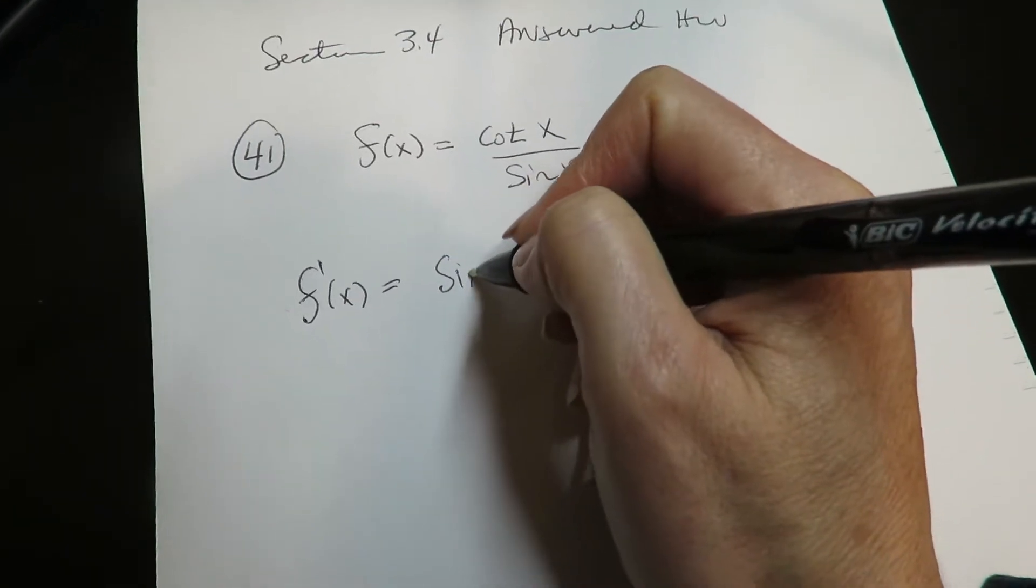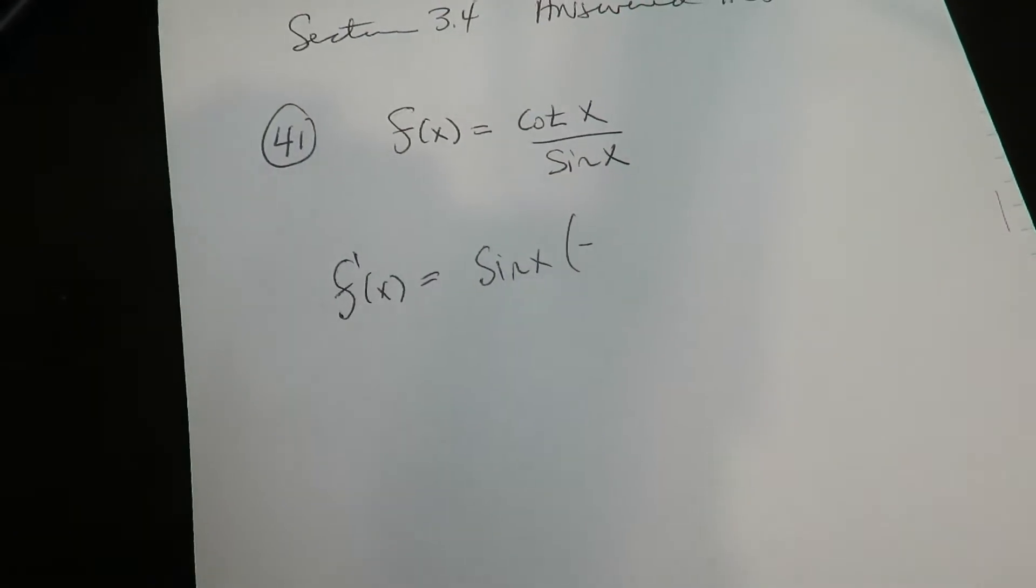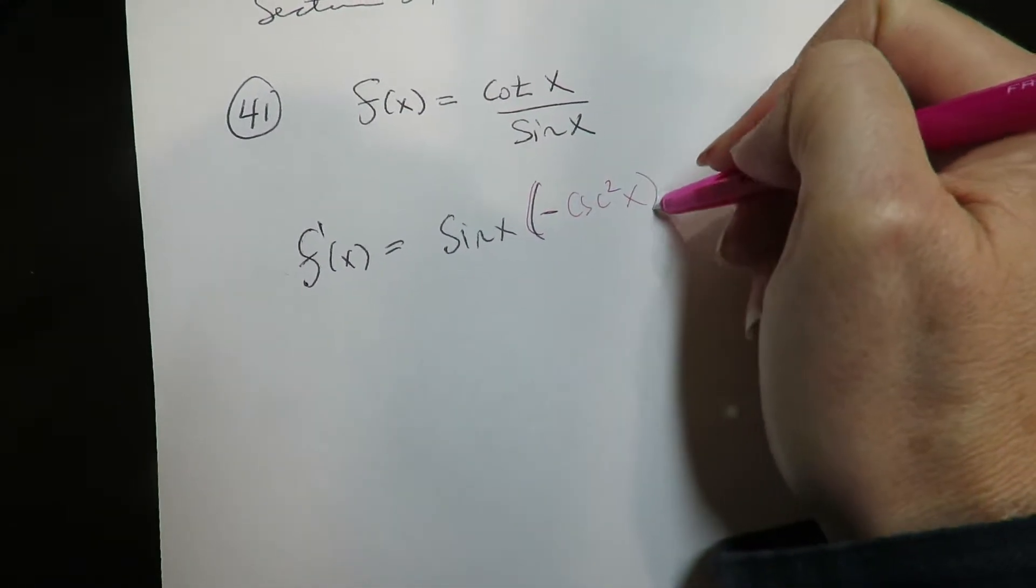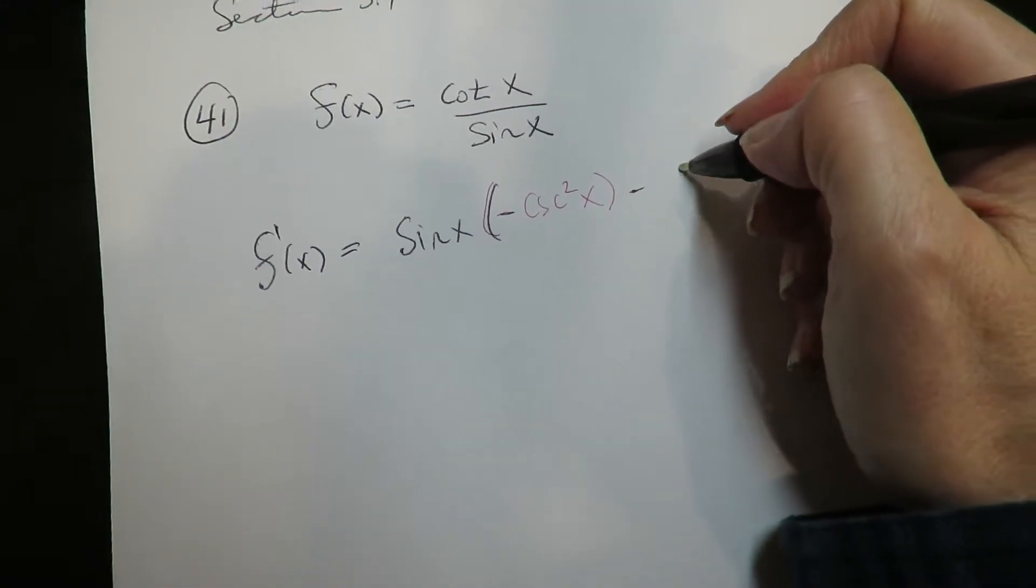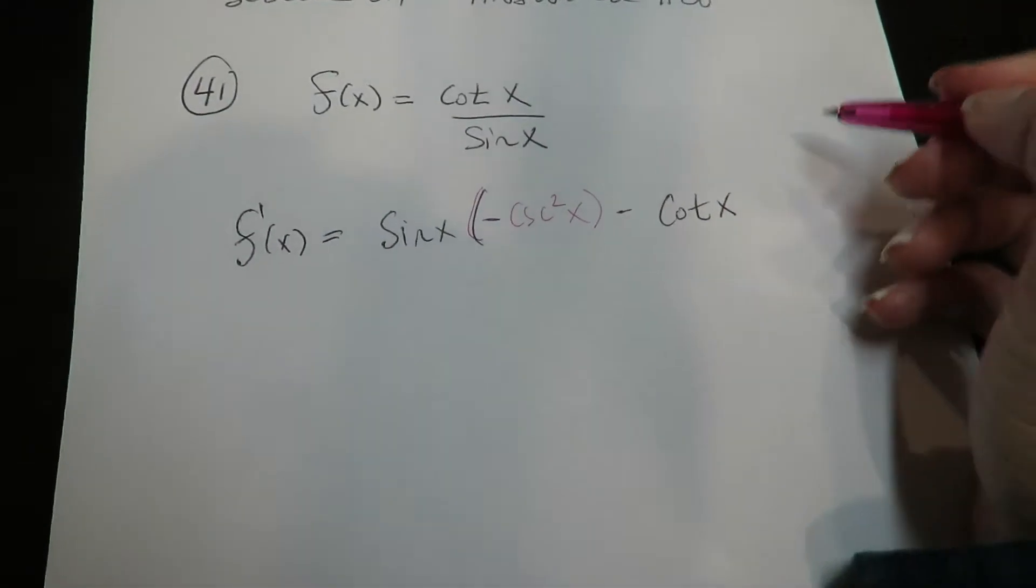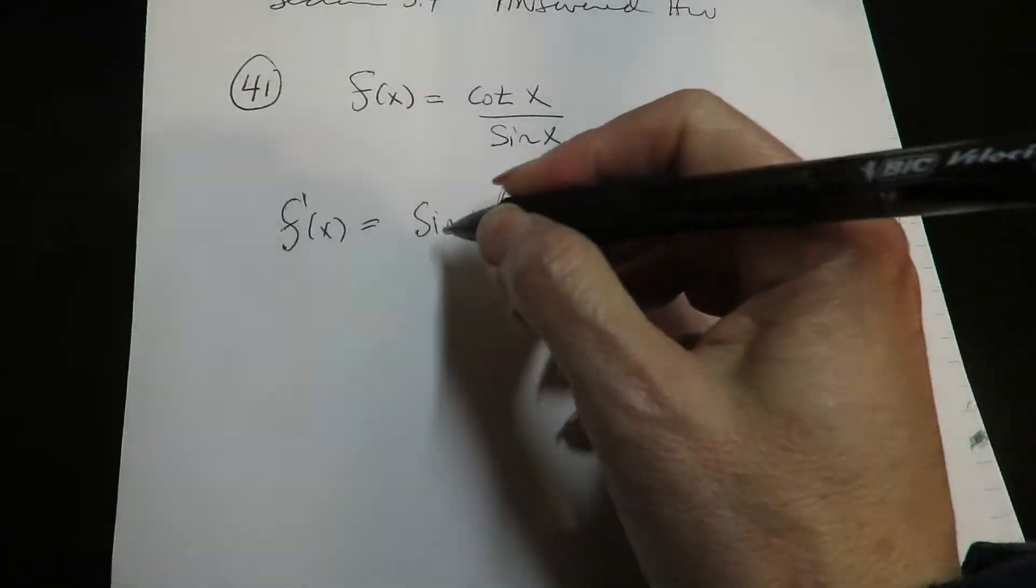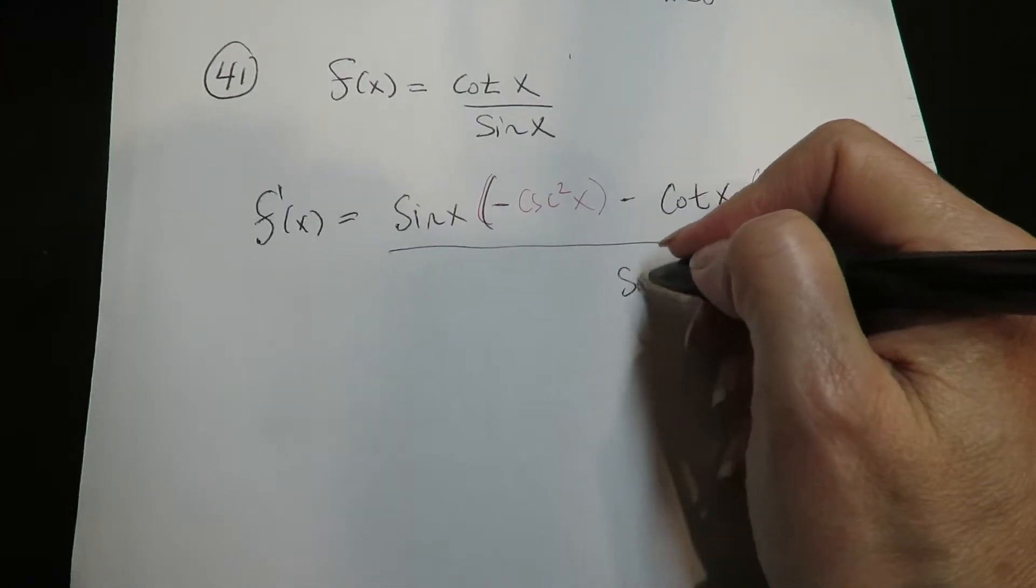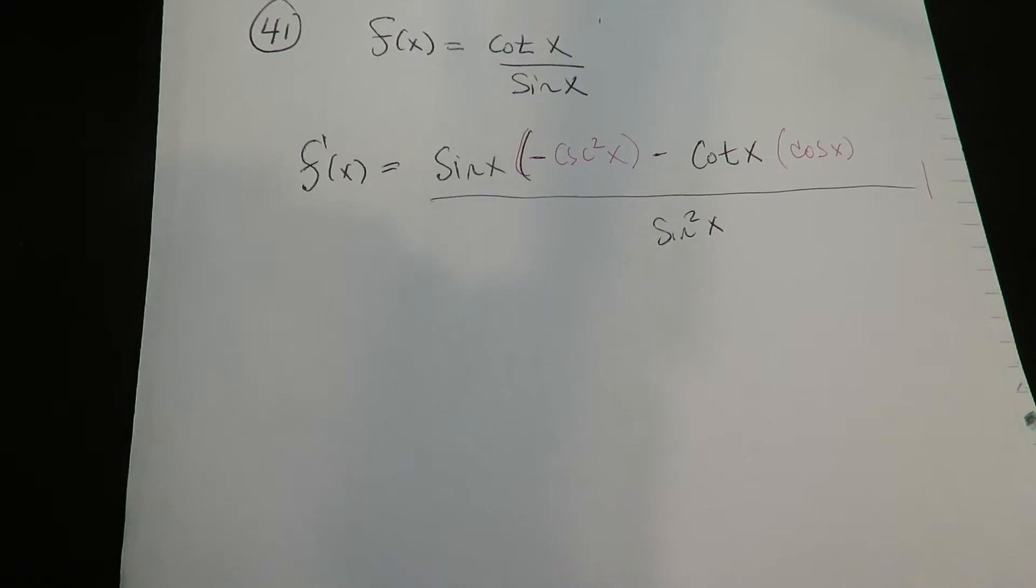This is just the denominator times the derivative of the numerator minus the numerator times the derivative of the denominator all over the denominator squared. Yeah, this is just basic quotient rule.